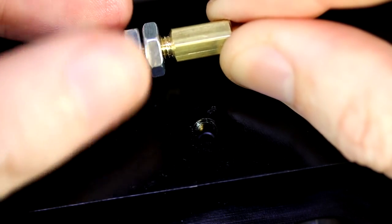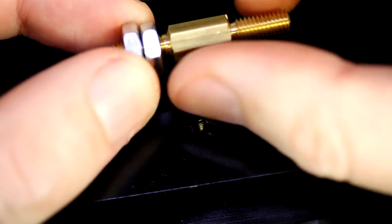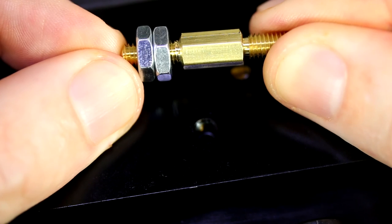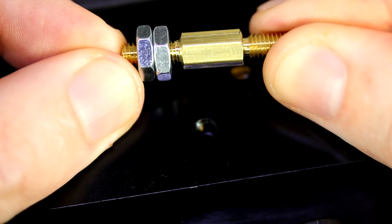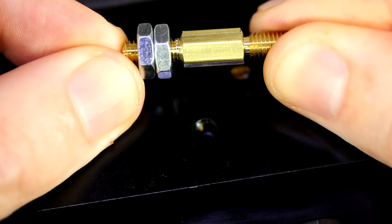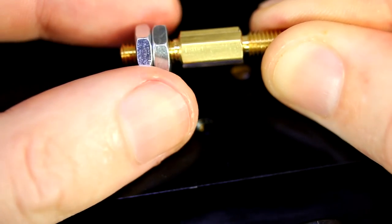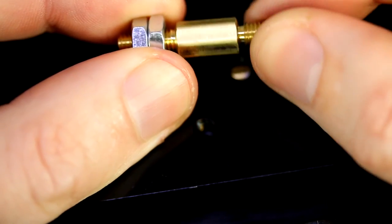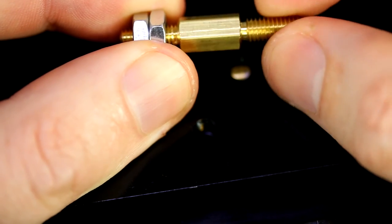Now the other method is to use opposing nuts. So in this case, one of the nuts is pressing to the right on the threads, and the other one is pressing to the left on the threads. And because they're pressed together, there's no wiggle, but we can still turn the screw.